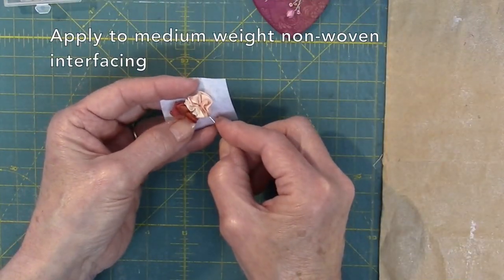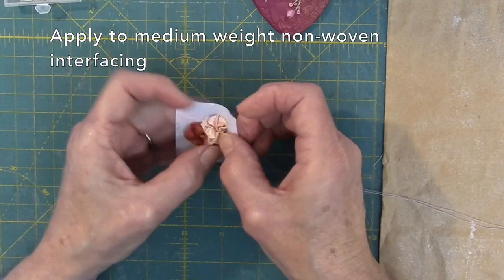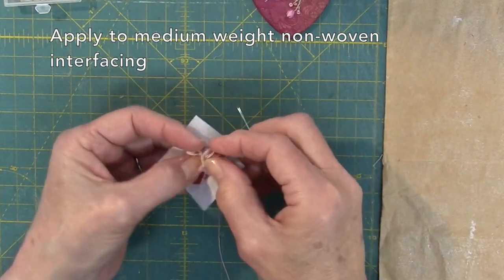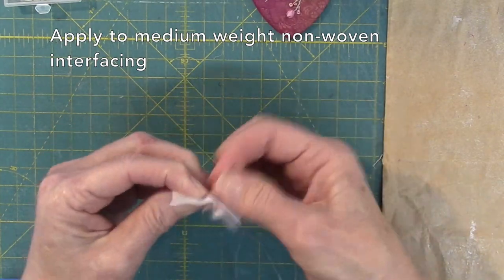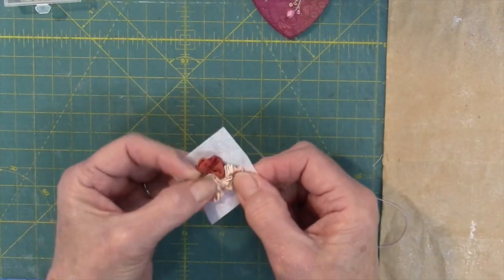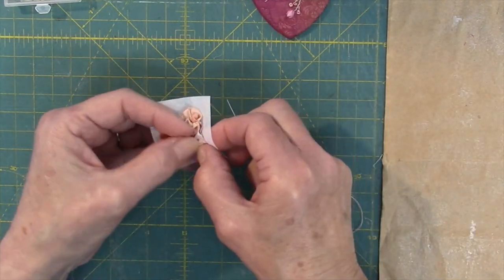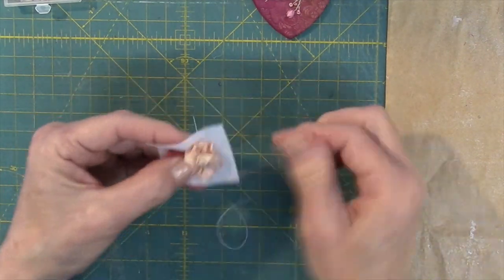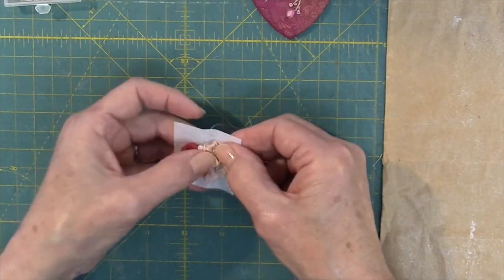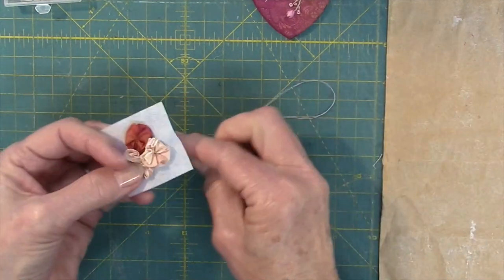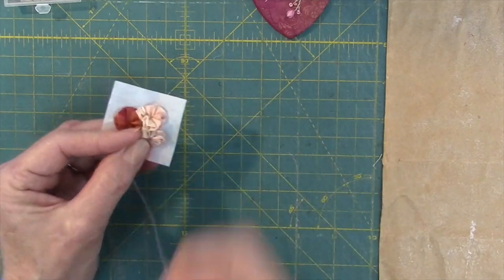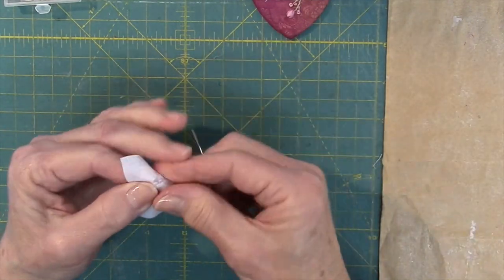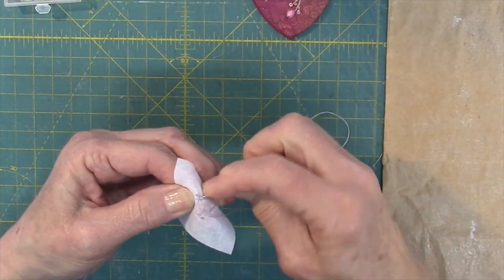A small piece of medium weight non-woven interfacing is great to use to sew ribbon work compositions together. For this design I've already sewn two flowers and have applied them to the interfacing. For the last flower, sew the thread to the flower then sew directly into the interfacing. Secure all flowers in place several times, then secure thread on underside with whip stitches.